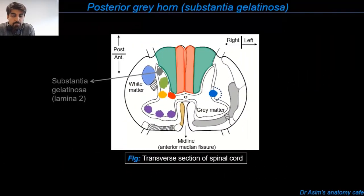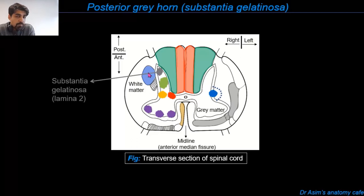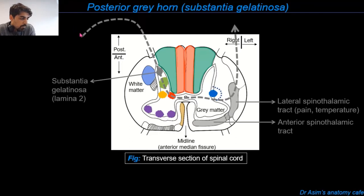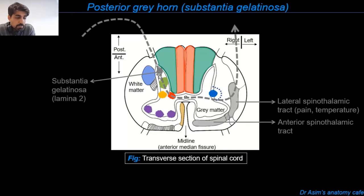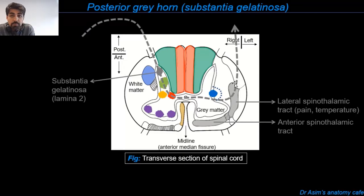The substantia gelatinosa group of cells is present at the apex of the posterior gray horn and extends throughout the length of the spinal cord. It is linked with receiving sensory information regarding pain and temperature. The afferent neurons bringing in pain and temperature information from the body travel through the spinal nerve and the posterior root to enter the posterior gray horn, where they synapse with neuronal cell bodies inside the substantia gelatinosa. This sensory information is then carried up to higher brain centers such as the thalamus via the lateral spinothalamic tract.